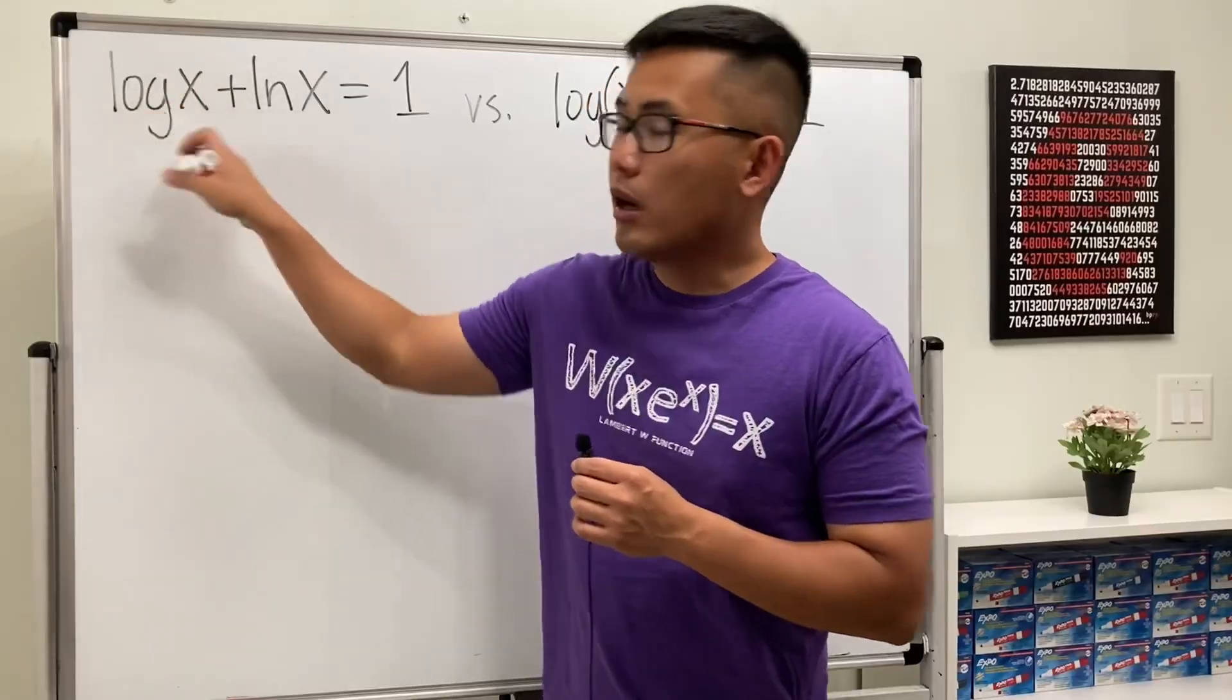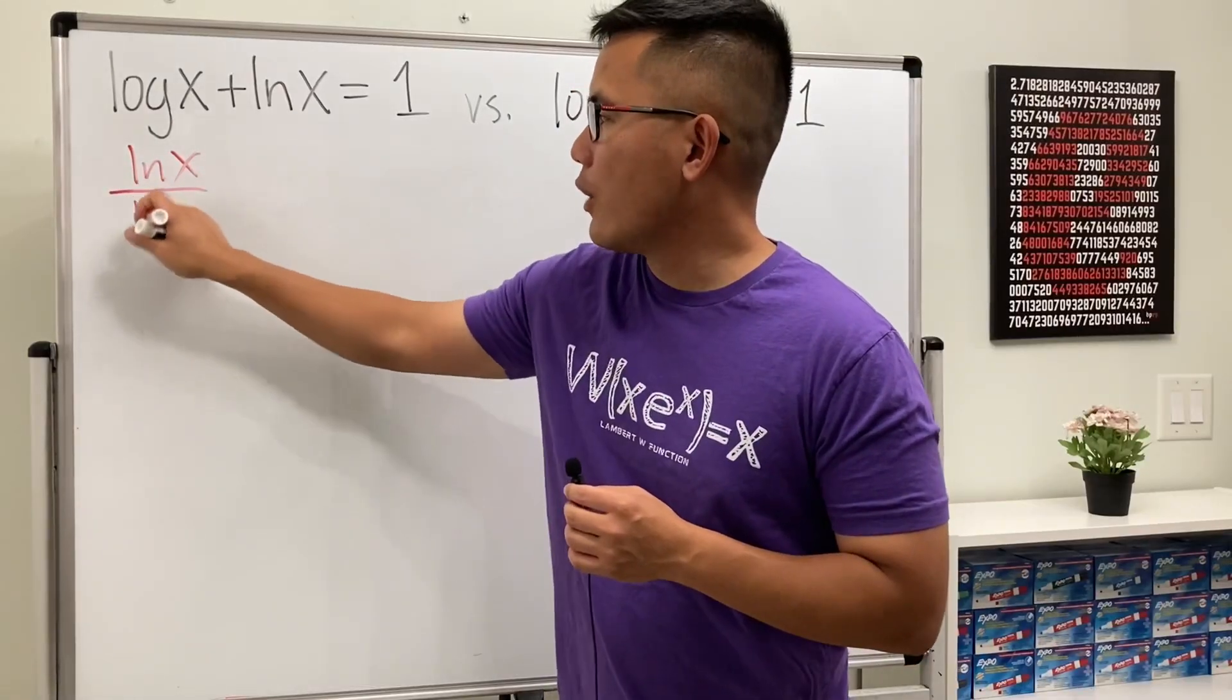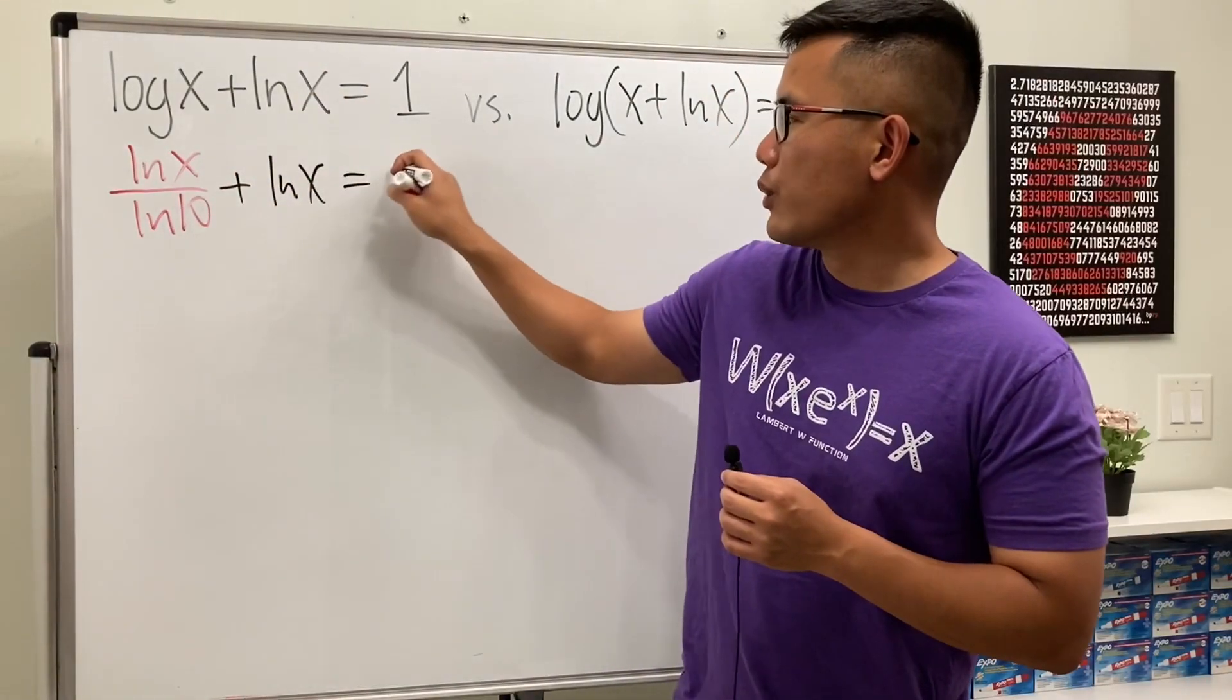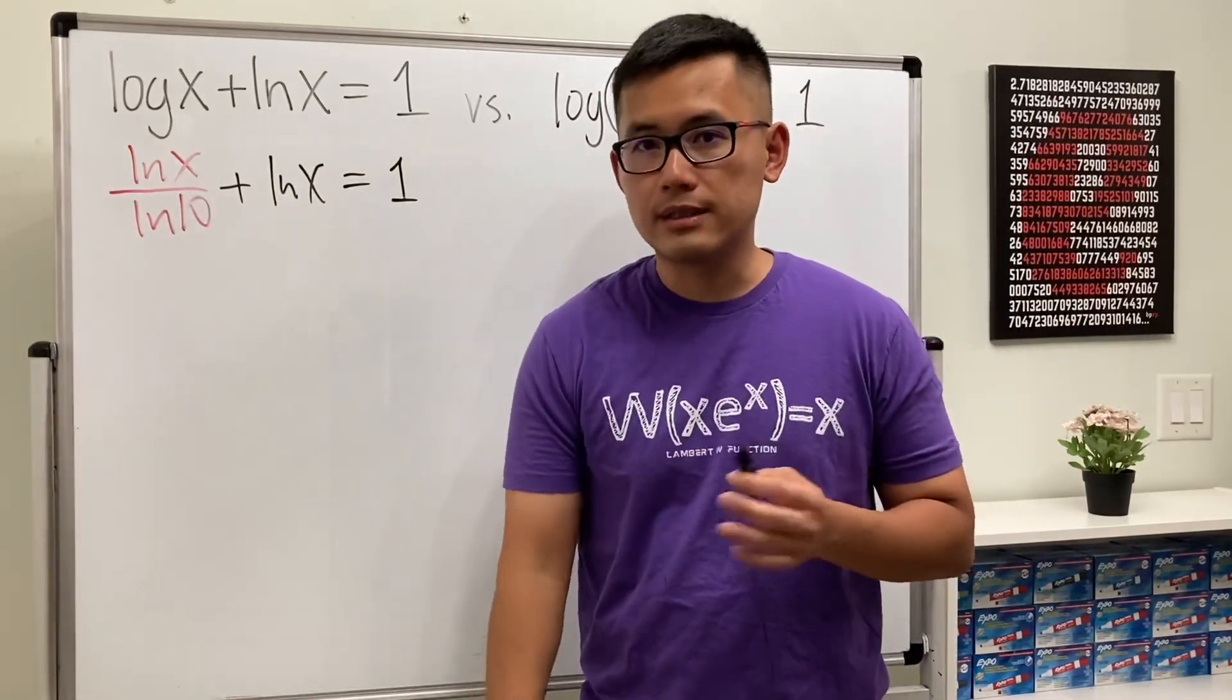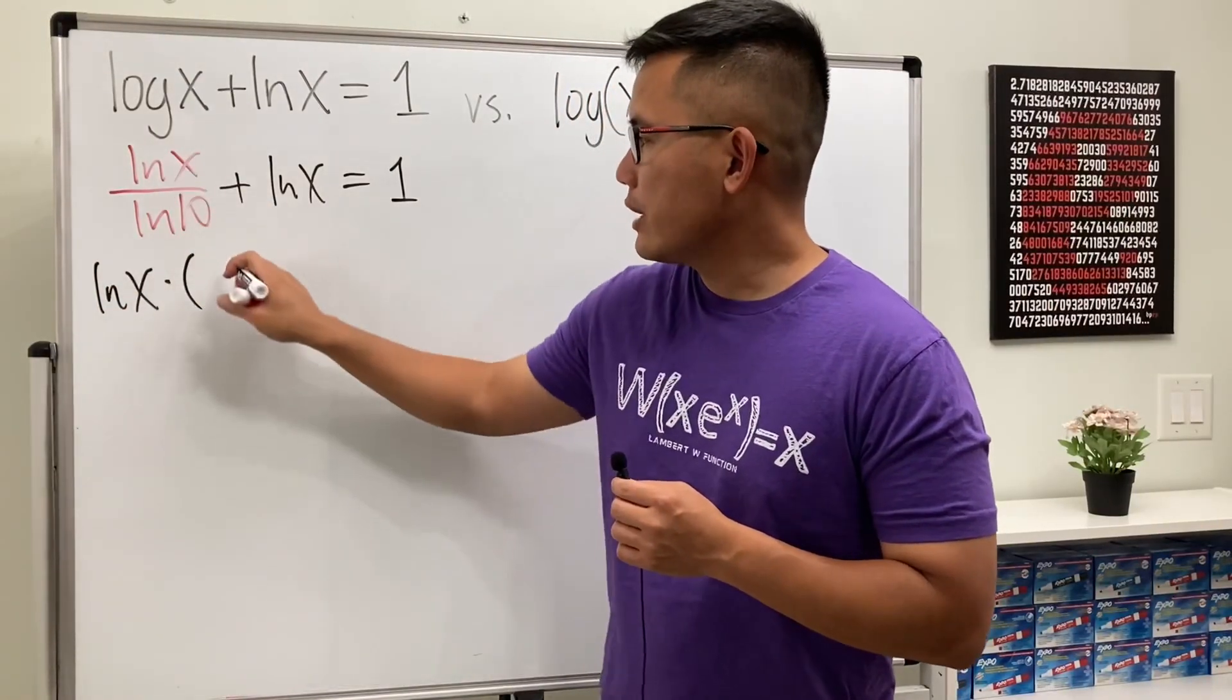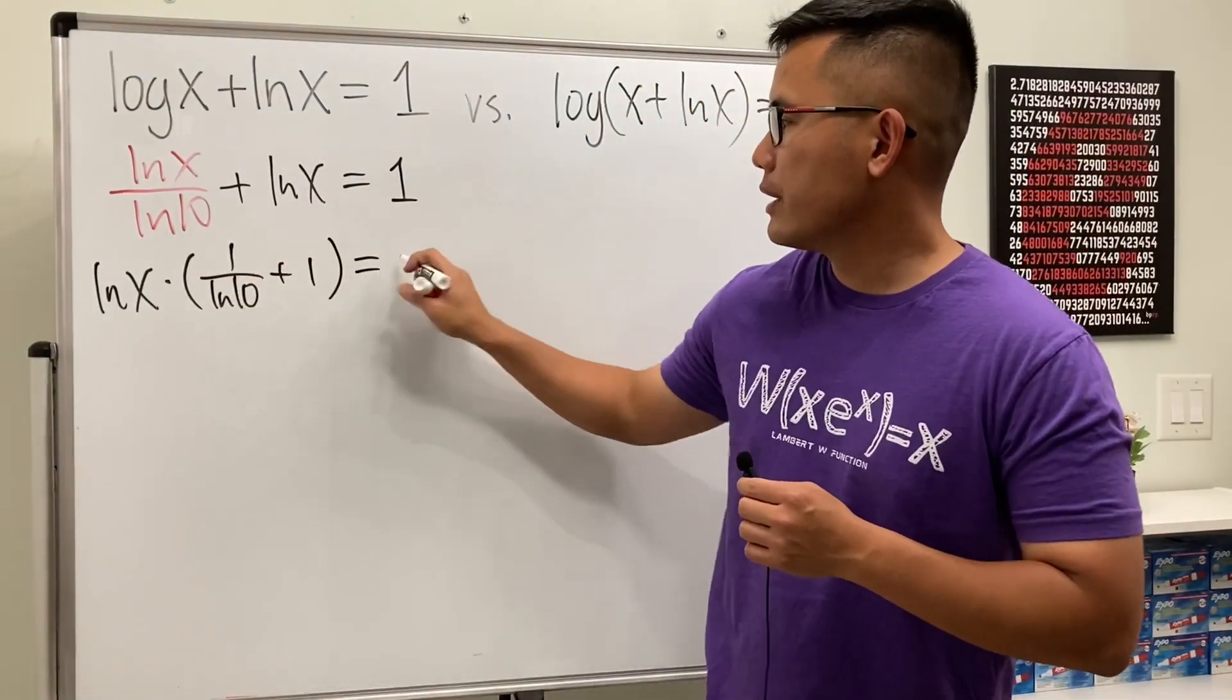we can just take a look at log of x and use the change of base formula. We can rewrite this as ln of x over ln of the base number here, which is 10. And then we still have plus ln of x, and this is equal to 1. And now notice that both of them have lnx, so we can factor it out. So we have the ln of x right here times, this right here is just 1 over ln 10, and then plus 1, and this is equal to 1.